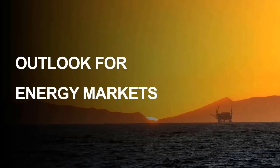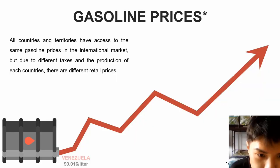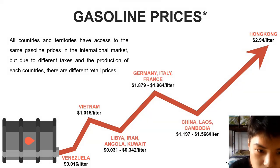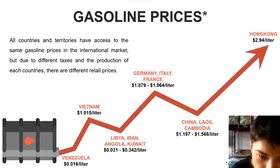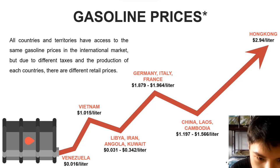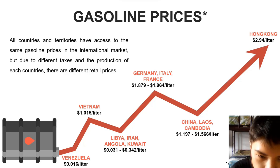I will talk about my part on the outlook for the energy market. All countries and territories have access to the same gasoline price in the international market, but due to differences in tax and production costs of each country, there will be different retail prices. Vietnam has a gasoline price of $1.015 per litre. Countries specialized in exploiting and producing oil have relatively low gasoline prices, about $0.031 to $0.342 per litre. European countries have quite high gasoline prices, about $1.8 to $1.9 per litre.